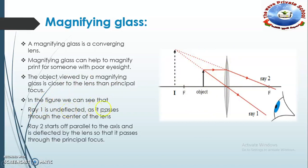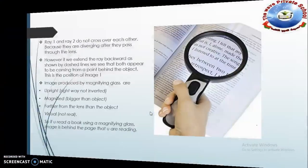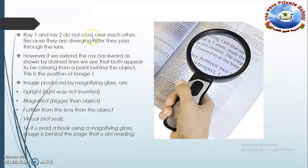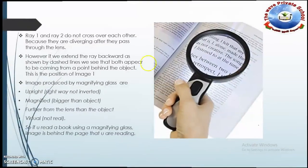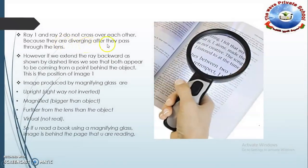Ray one starts from the arrow and is deflected by the lens so that after deflection it passes through the principal focus. Ray one and ray two do not cross each other because they are diverging after passing through the lens.